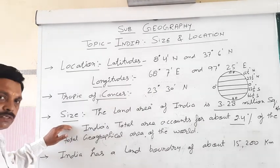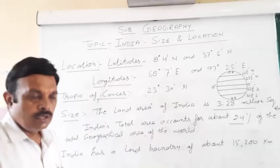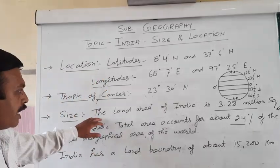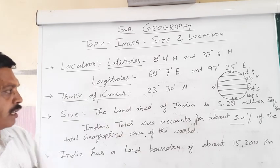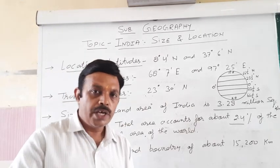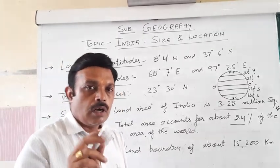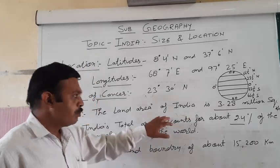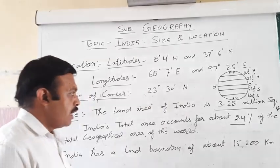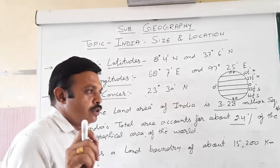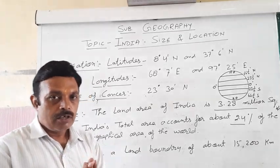Now we discuss about the size of India. According to size, India's land area is near about 3.28 million square kilometers. India is a very large country and it accounts for about 2.4% of the total geographical area of the world.